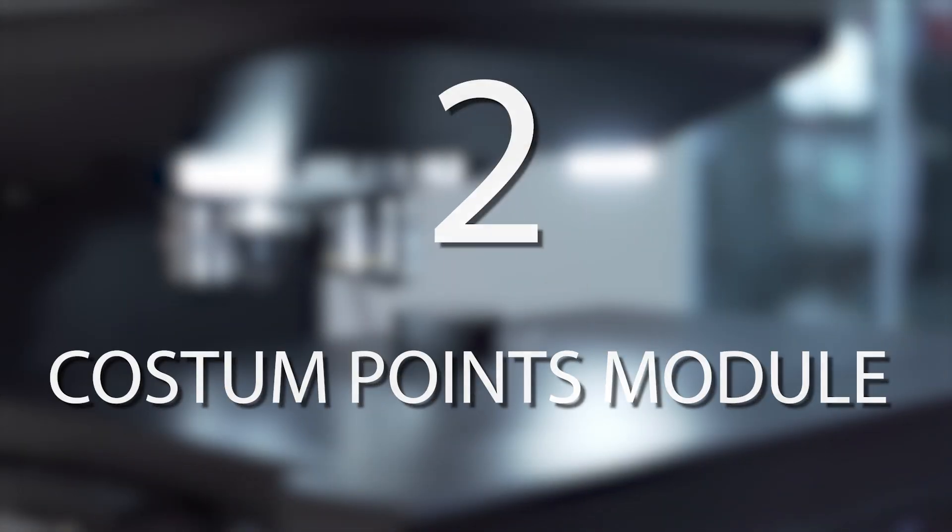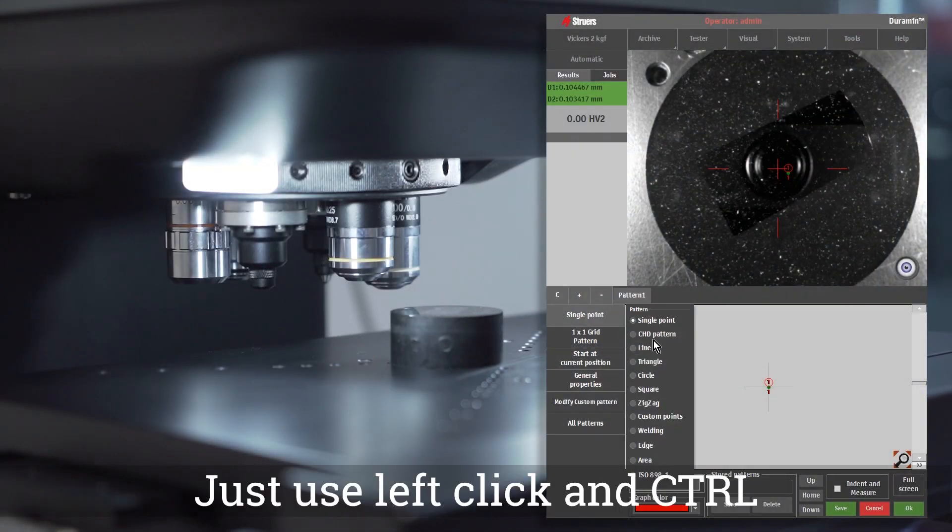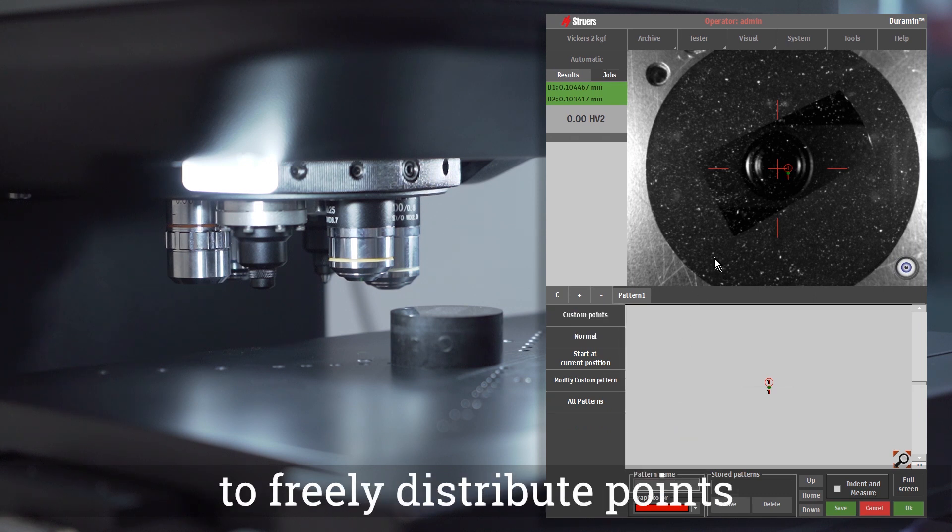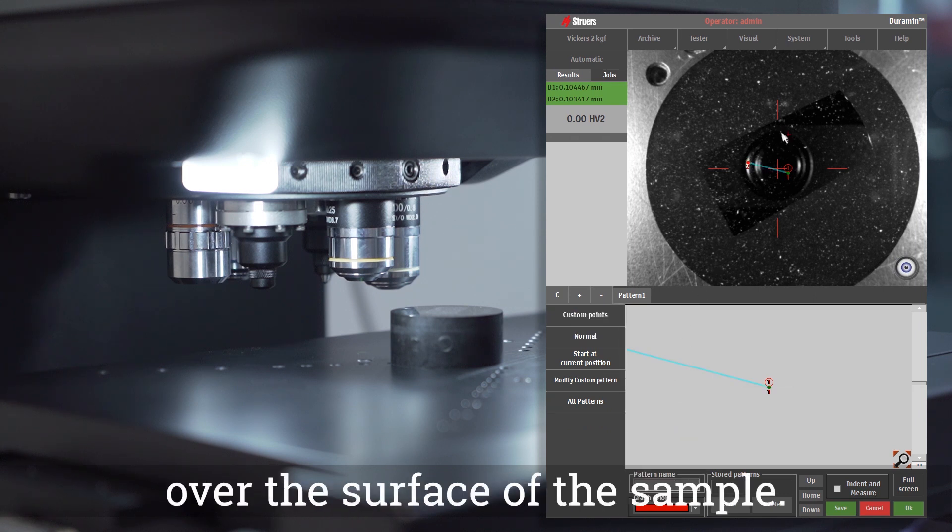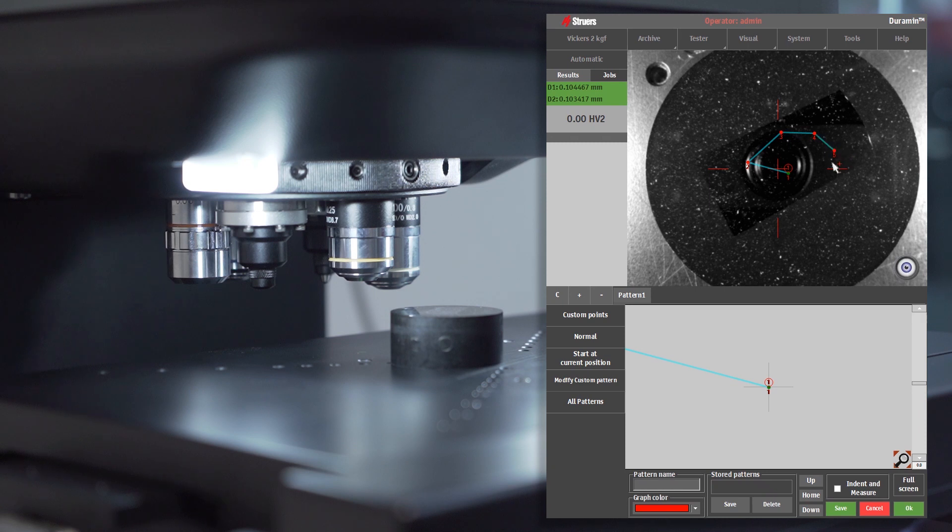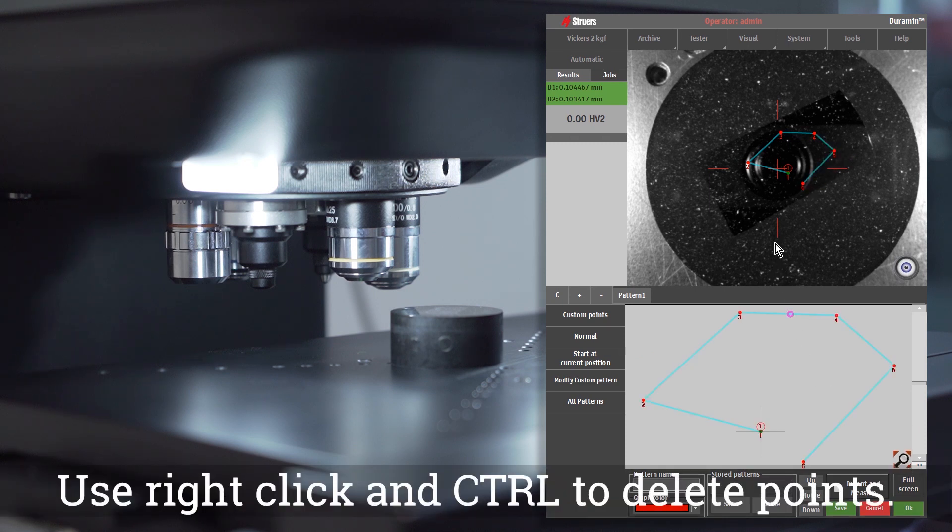Custom Points Module. Just use left-click and ctrl to freely distribute points over the surface of the sample. Use right-click and ctrl to delete points.